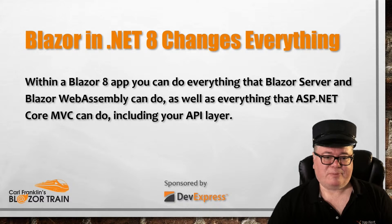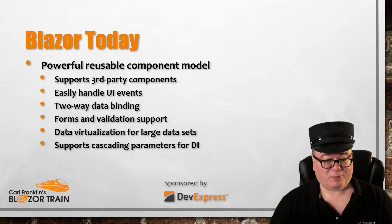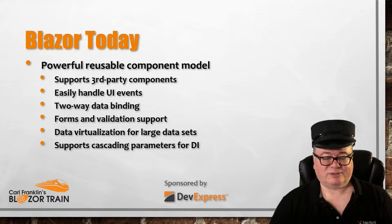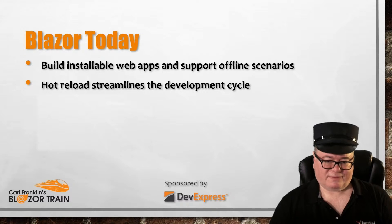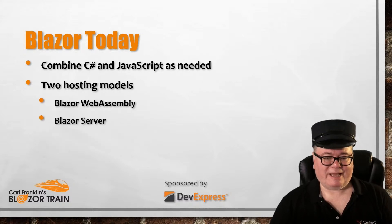In order to put this in perspective, we need to revisit the basics of Blazor as it is today. Blazor is built into ASP.NET Core, it has a powerful reusable component model that supports third-party components, lets you easily handle UI events, does full two-way data binding without a lot of ceremony. It has support for forms and validation, data virtualization for large data sets, and cascading parameters for dependency injection. You can build installable web apps and even support offline scenarios. It has hot reload, which streamlines the development cycle. Best of all, you can combine C# and JavaScript as needed.